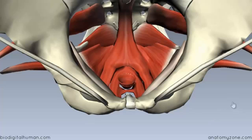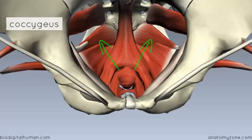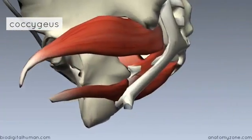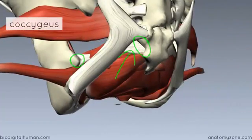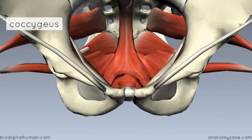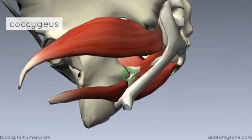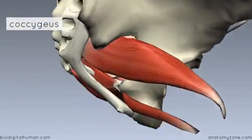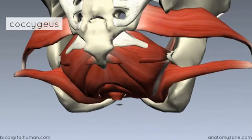The other muscle of the pelvic diaphragm is the coccygeus, which you can see here on either side. This muscle lies over the sacrospinous ligament. Rotating to the back, you can see this ligament connecting the sacrum to the ischial spine. The coccygeus forms the posterior part of the pelvic diaphragm. It originates on the ischial spine and inserts laterally on the coccyx and the adjacent margins of the sacrum, as you can see when rotating to the back.